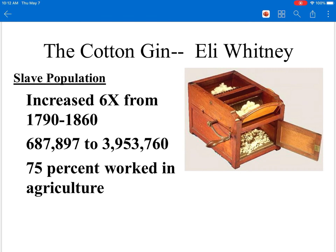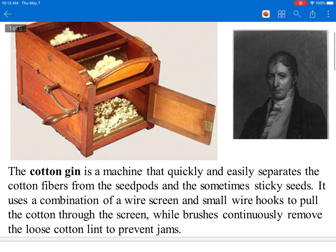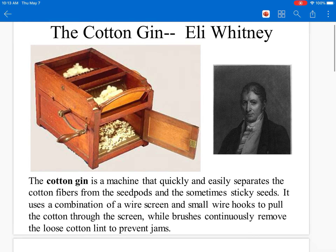To put that in perspective: if Virginia had 100,000 slaves in 1790, by 1860 — the year before the Civil War starts — that number would have risen to about 600,000. Slavery grew tremendously during those decades; more and more slaves were being brought into the Southern states. The actual numbers: we estimate 687,000 slaves in the United States in 1790, and by the beginning of the Civil War there were almost four million. Three out of every four slaves — 75 percent — were working in agriculture, working on farms.